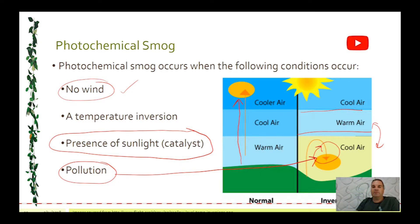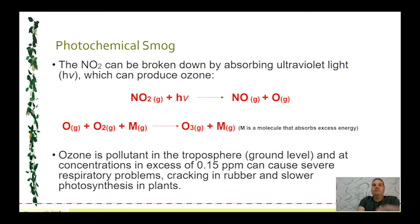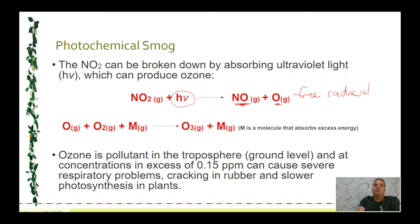Nitrogen dioxide is broken down by absorbing ultraviolet light from the sun, which splits the NO₂ into nitrogen monoxide and what we call an oxygen radical, sometimes called a free radical. Free radicals very readily want to react with other things. The free radical reacts with an oxygen molecule to form ozone (O₃). The M in the equation represents just another gas, which absorbs the excess energy that the free radical needs to get rid of.